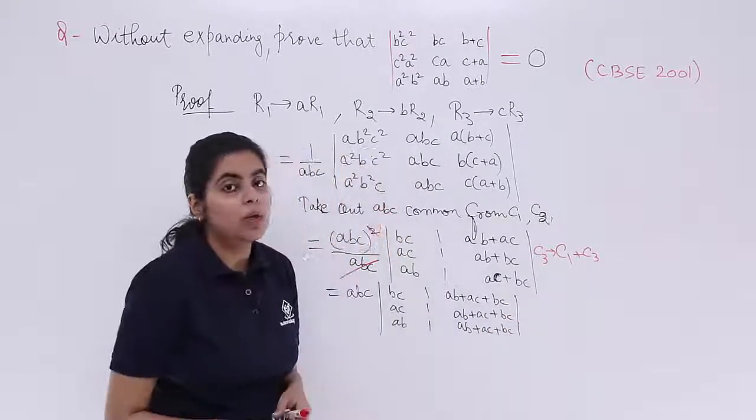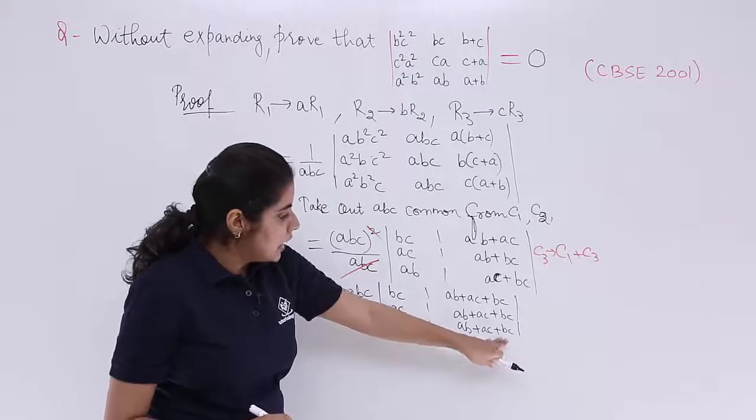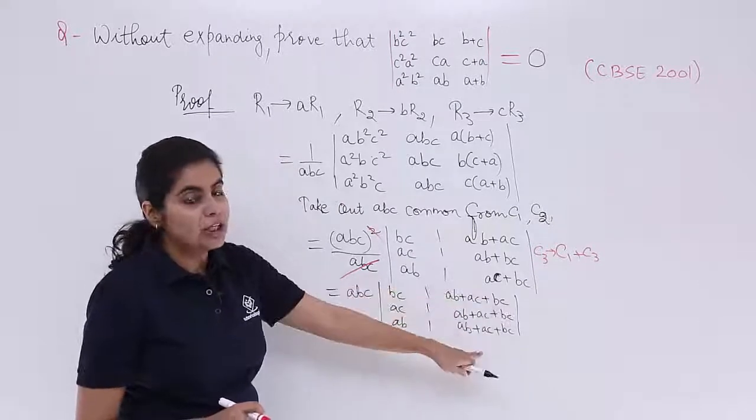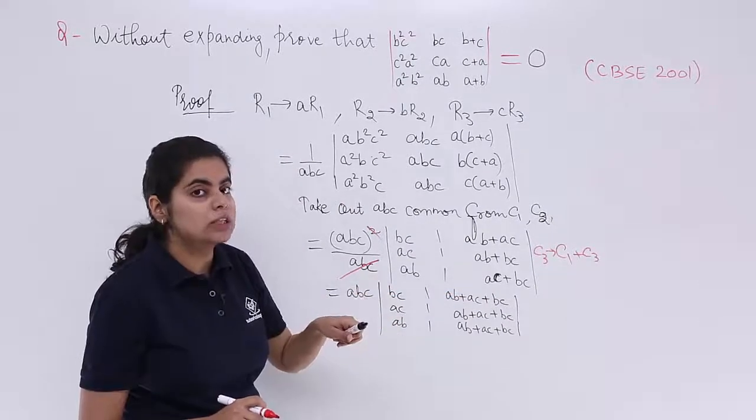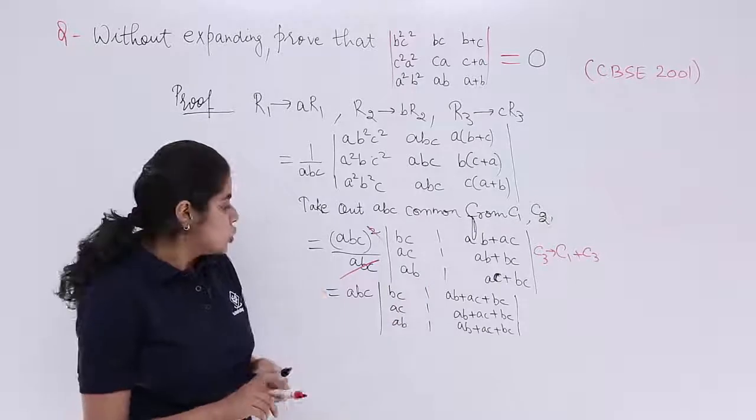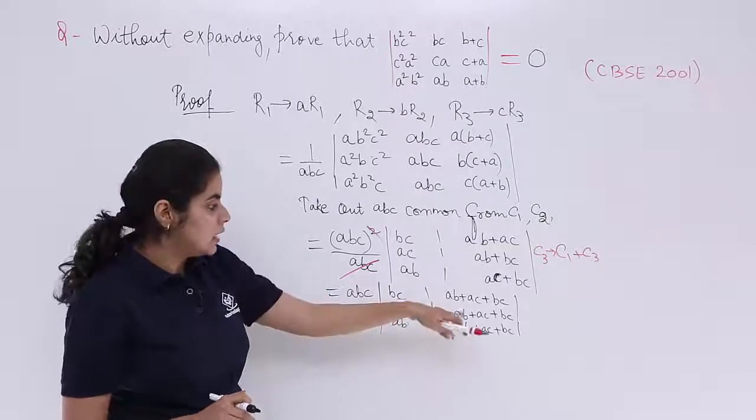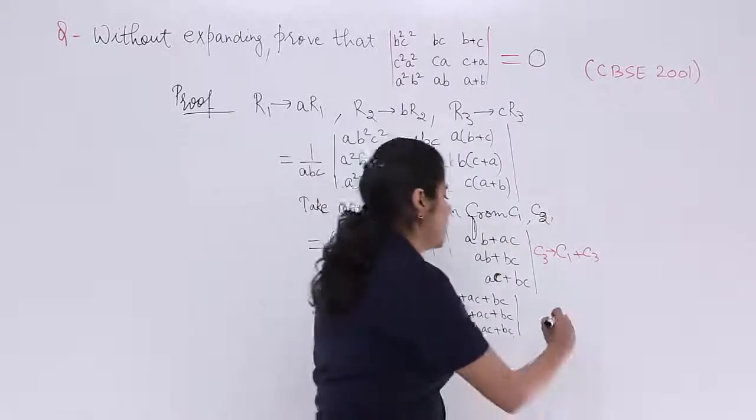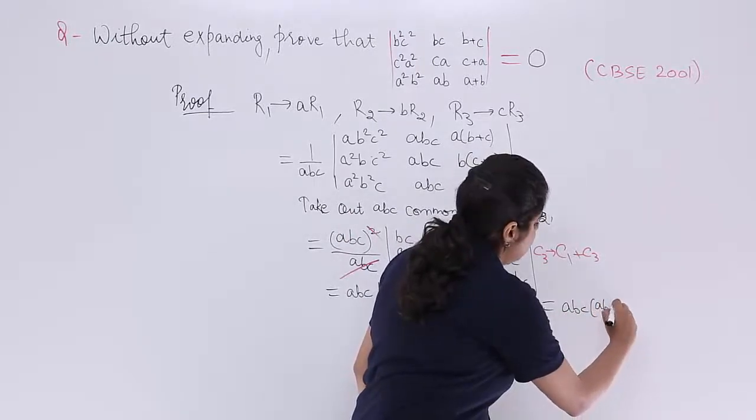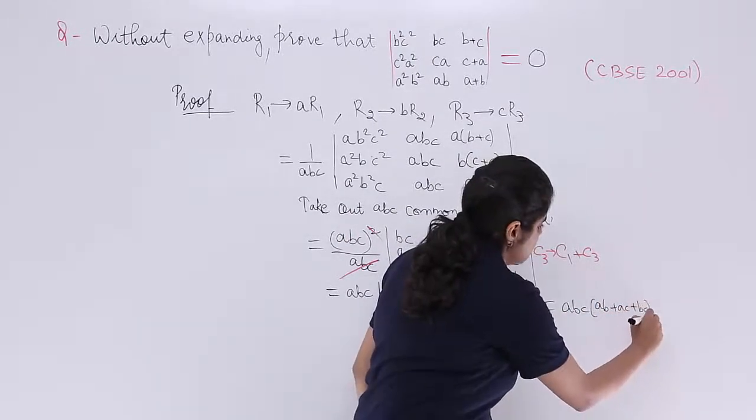Close the determinant. Now what happens, we see that this thing is coming in all the three elements of the third column. You can take it as common. So ABC is already outside. AB plus AC plus BC has come.